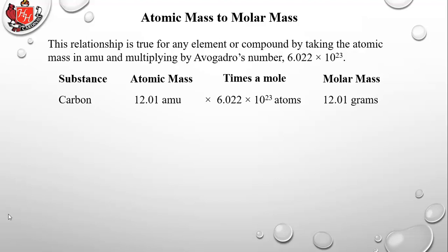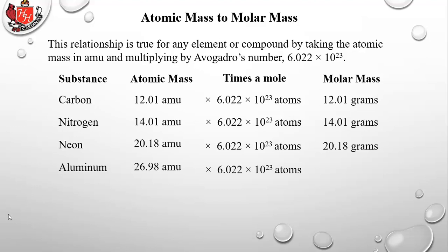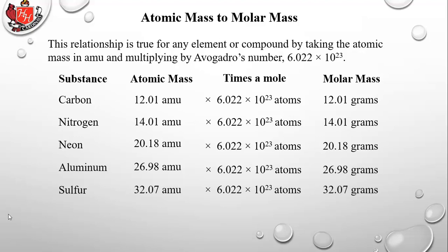By knowing the substance and the mass, you can determine how many atoms you have — and that's what makes chemistry possible. Nitrogen has an atomic mass of 14.01 amu; multiply by a mole and you get 14.01 grams. Neon is 20.18 amu → 20.18 grams per mole. Aluminum is 26.98 amu → 26.98 grams. Sulfur is 32.07 amu → 32.07 grams. The number stays the same; only the unit changes from amu to grams.